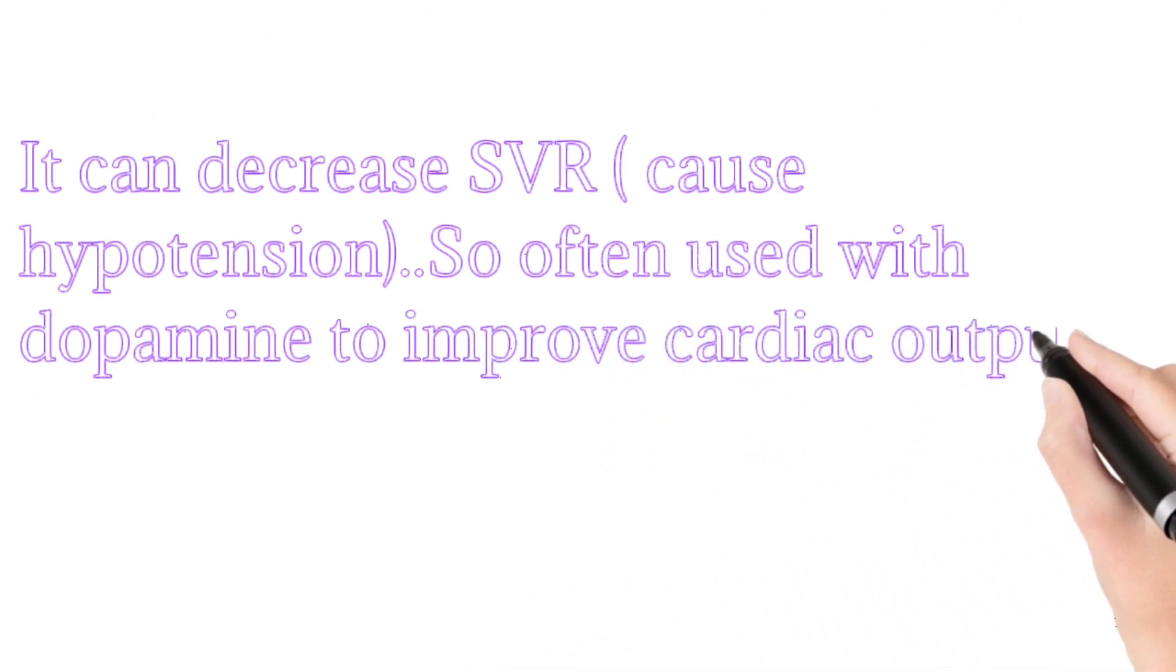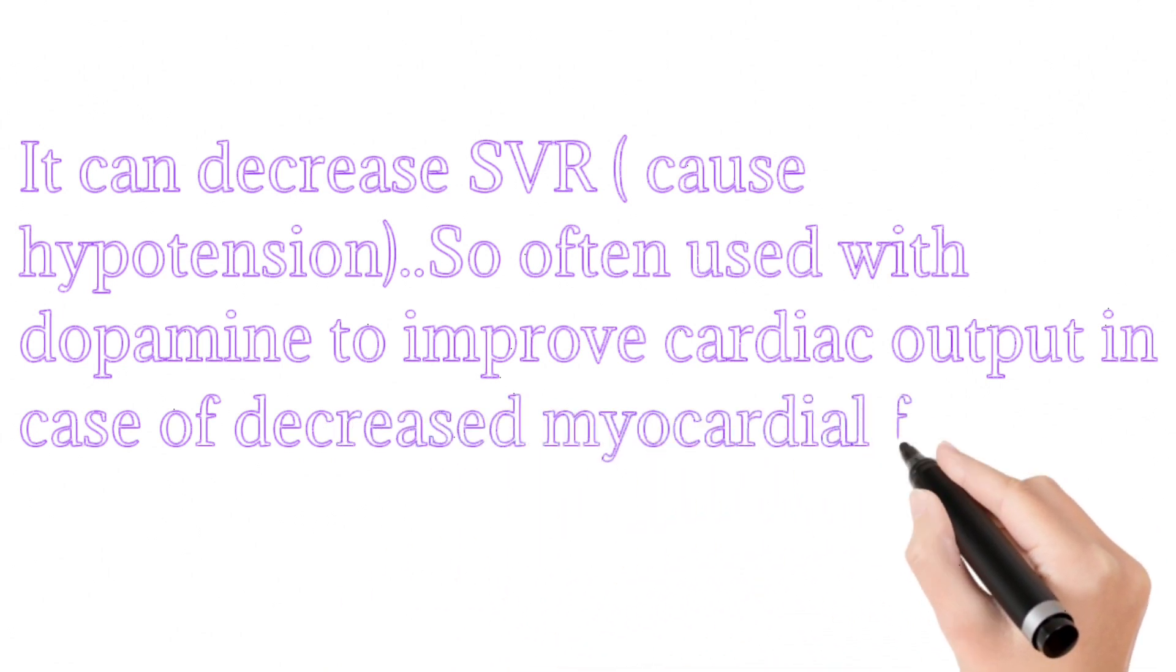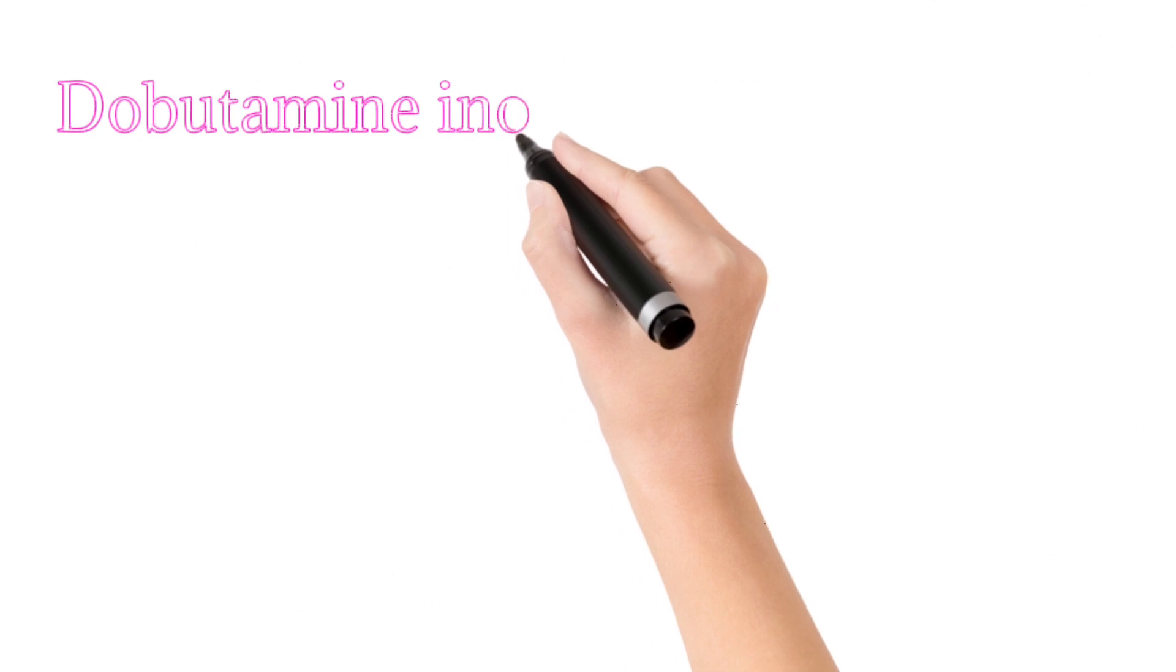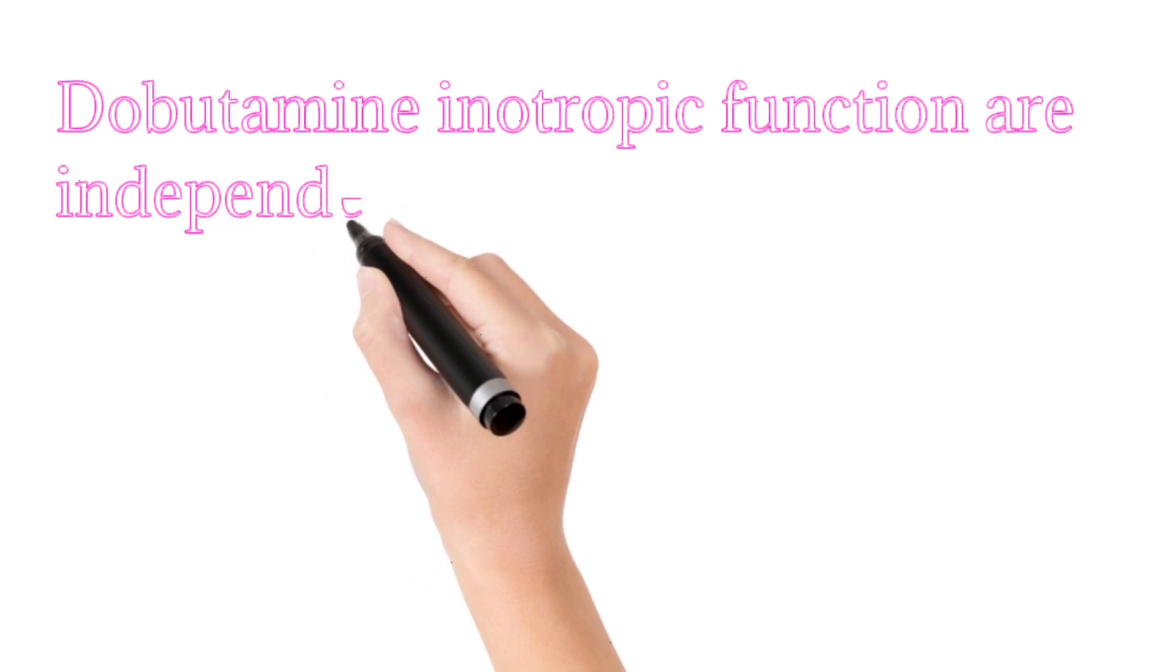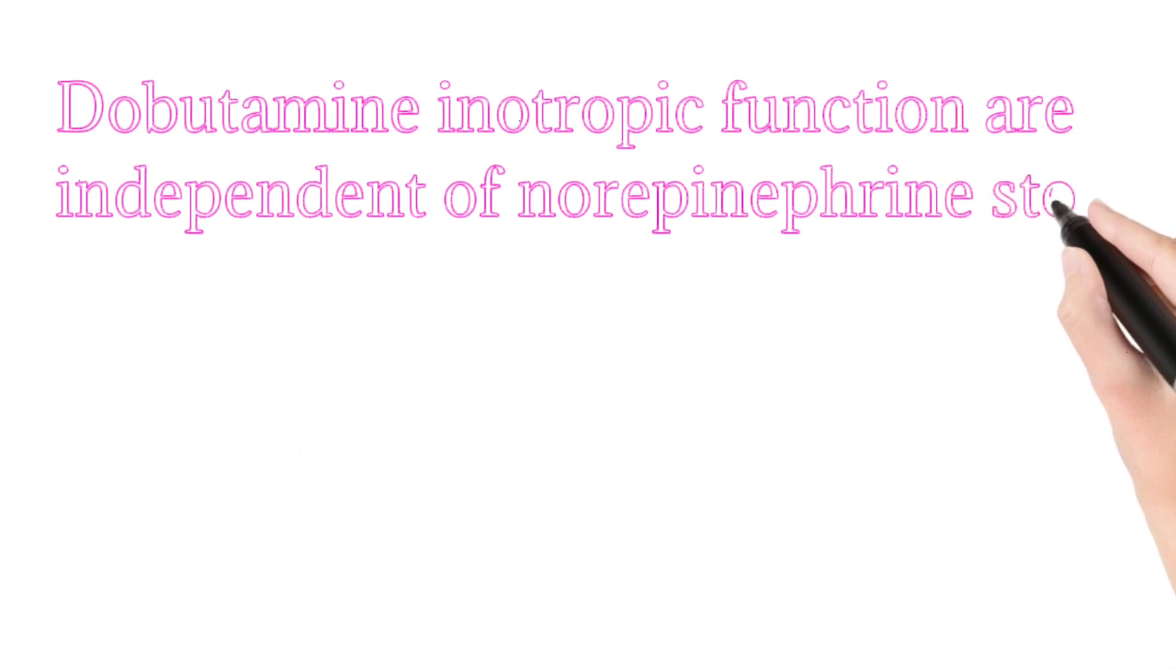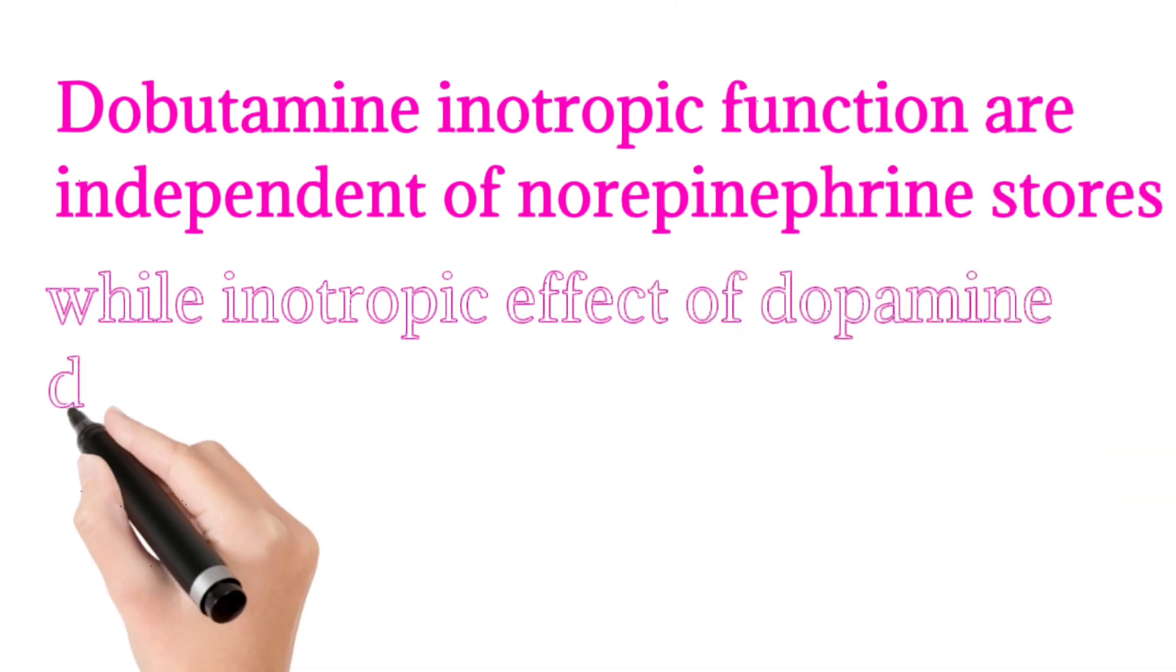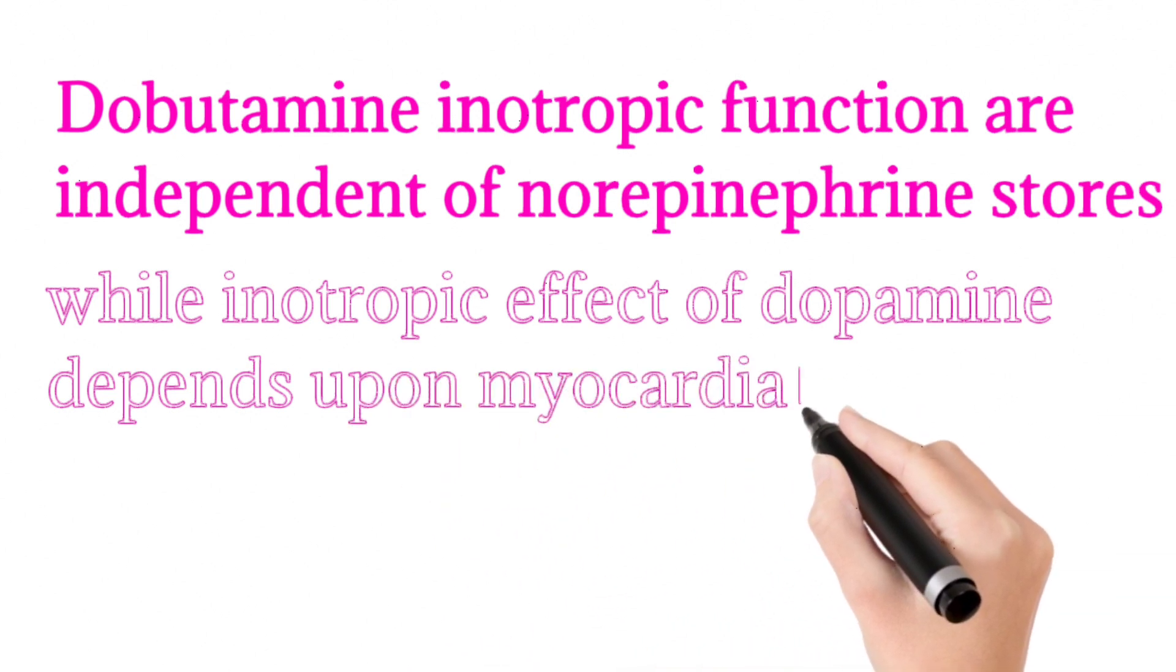Dobutamine's inotropic effects are independent of norepinephrine stores, while dopamine's inotropic effect is dependent on myocardial norepinephrine stores. This point is very important.